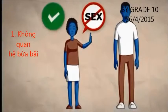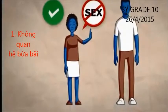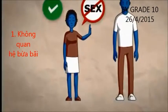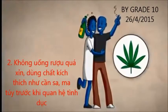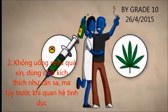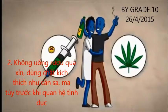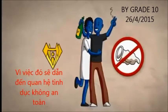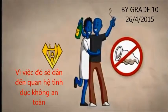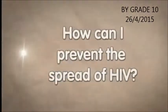Young people who have sex with men five or ten years older than they are are more likely to get HIV. Being drunk or using drugs before having sex may cause people to take risks that they may regret later. How can I prevent the spread of HIV?